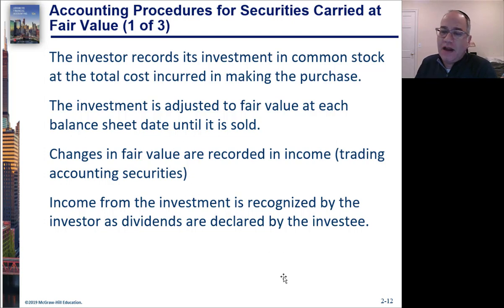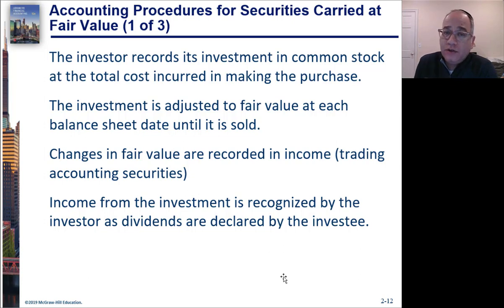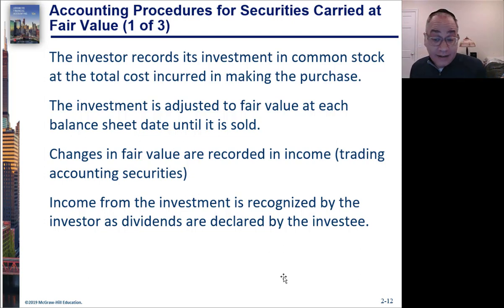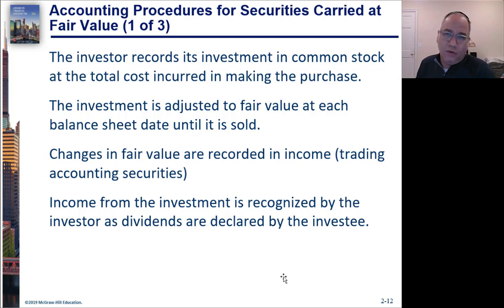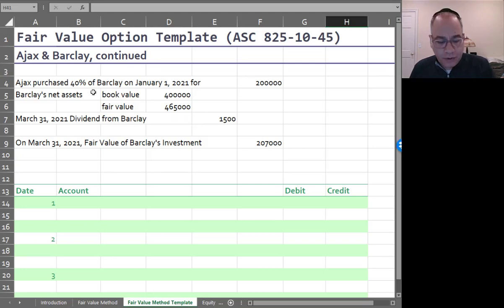When the investee declares a dividend, that's also going to be income, regardless of which method you're using. That's why we don't want you to use the fair value method if you have significant influence — because if you do, you could push the company to pay dividends and record that as income, manufacturing income artificially.